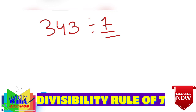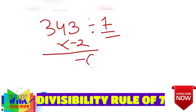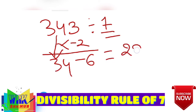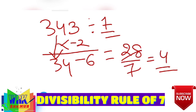Look at one more example: 343. Is 343 divisible by 7? Simply multiply the unit place digit by minus 2: (−2) × 3 = −6. Write down 34 as it is: 34 − 6 = 28. 28 divided by 7 is 4, so 343 is easily divisible by 7.